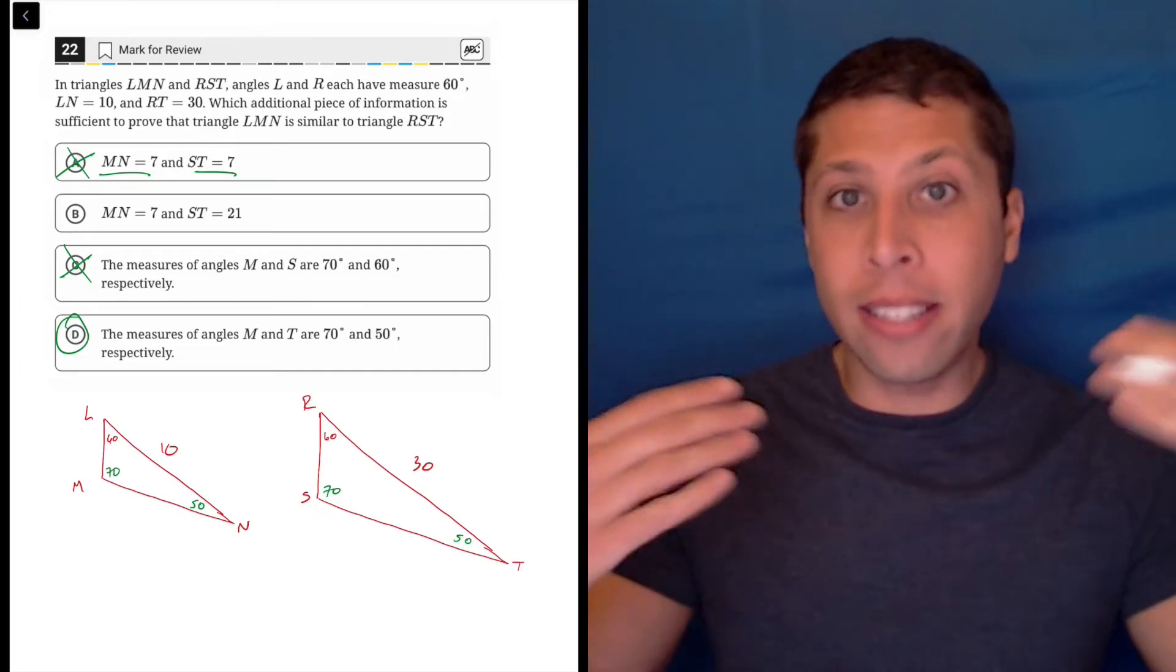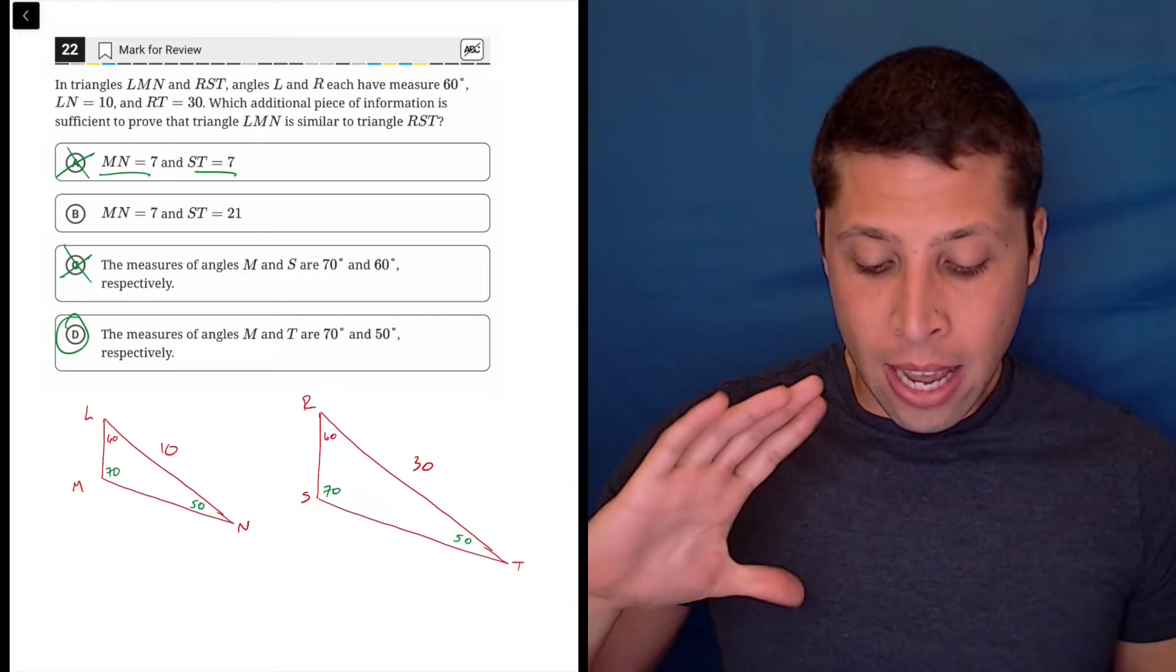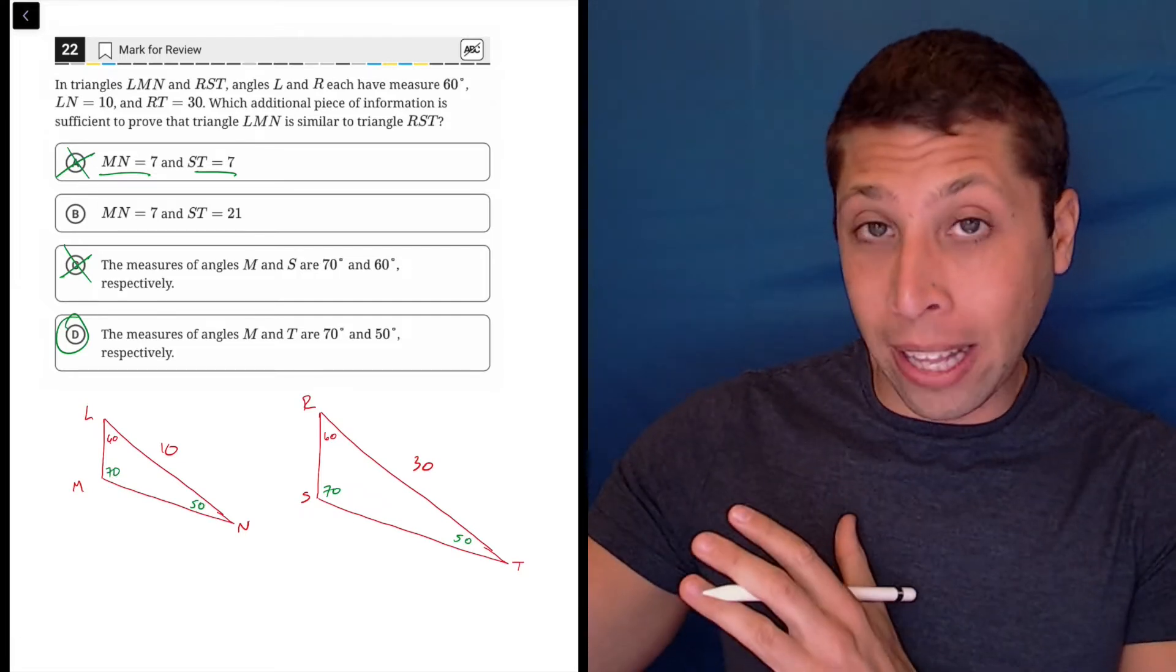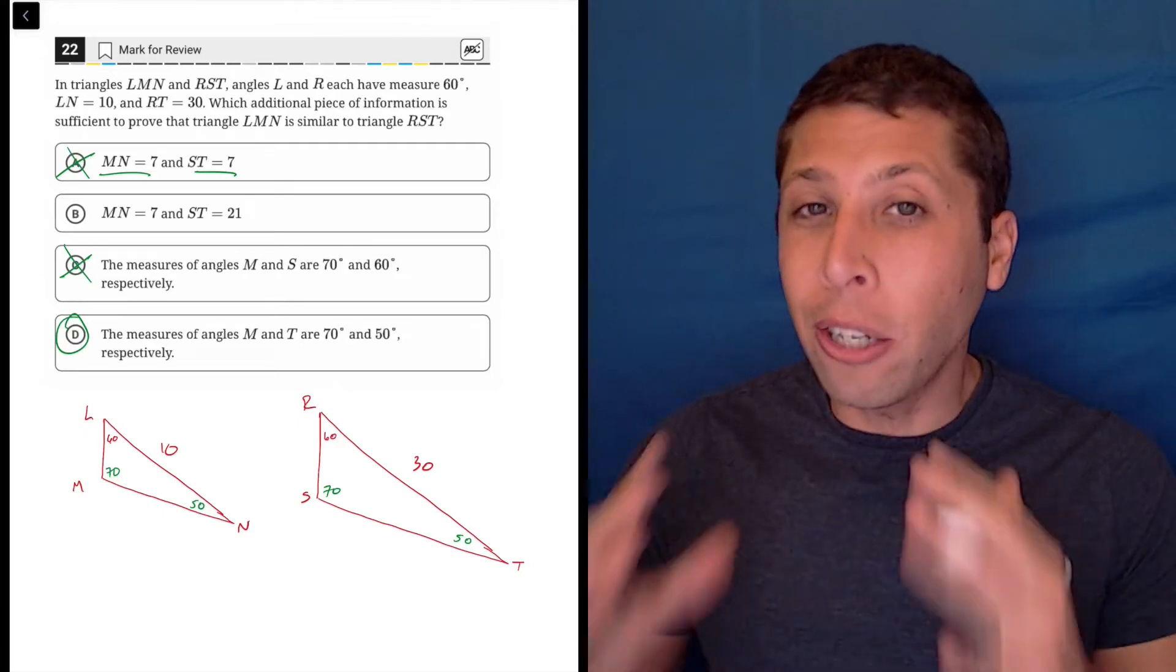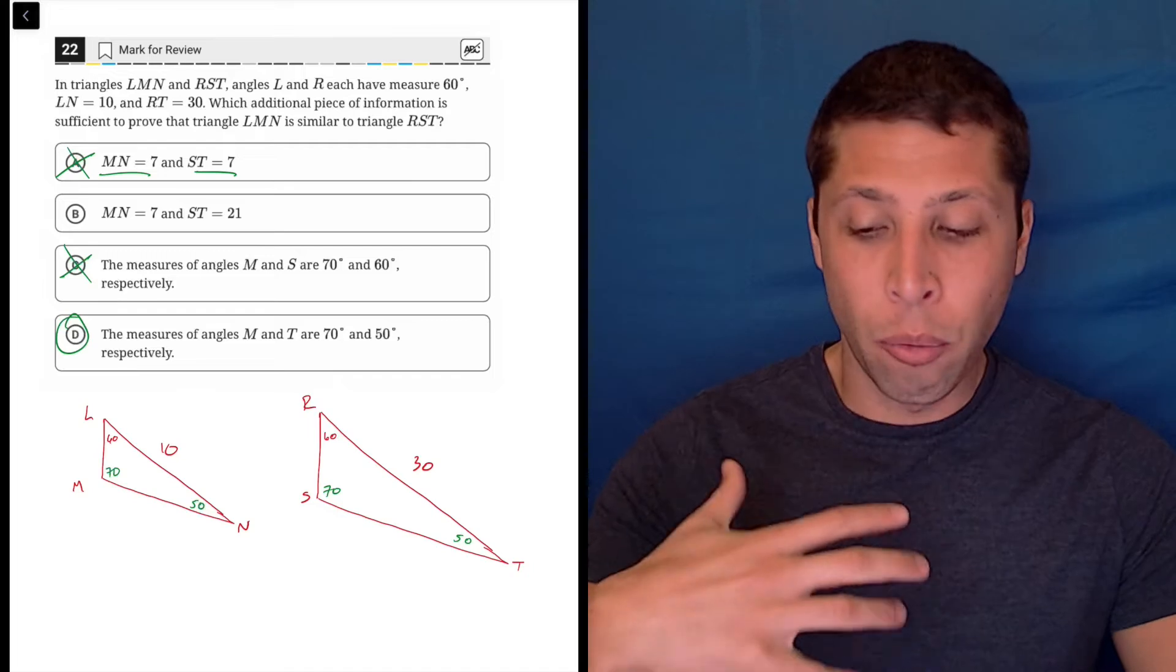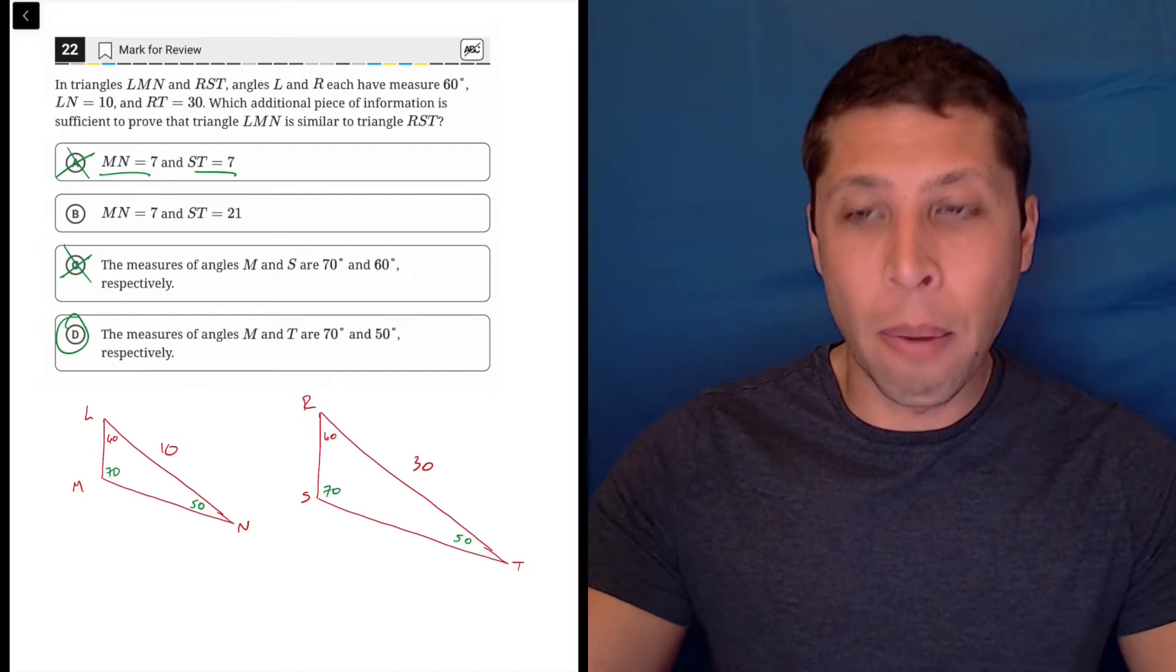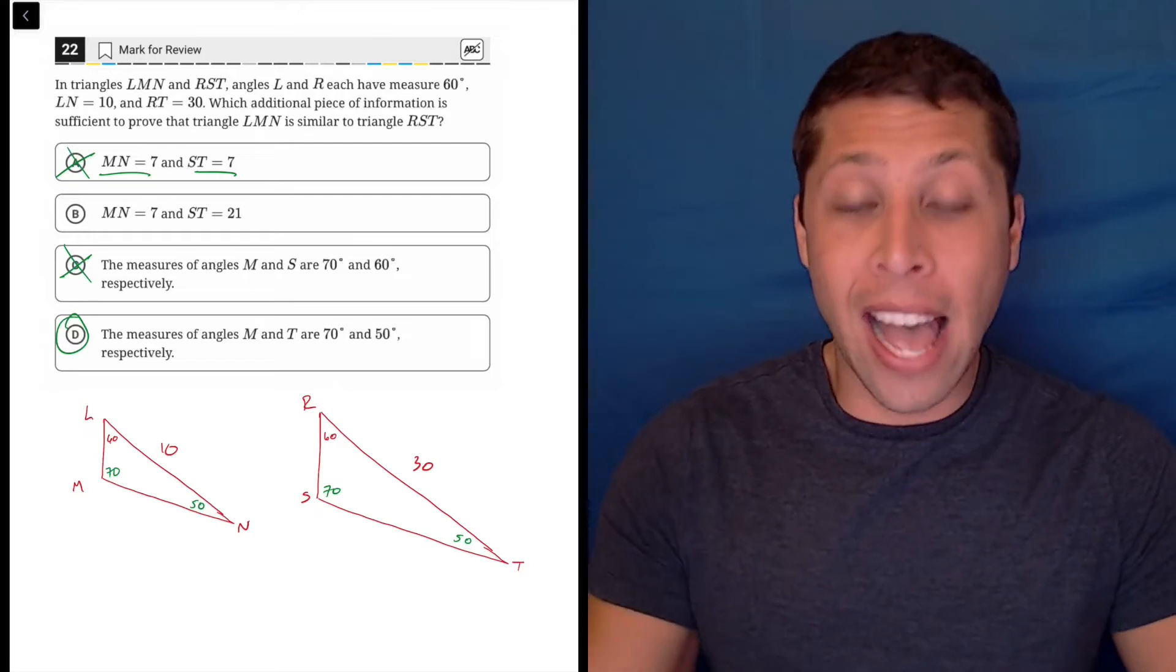So it does give us what we want, angles that are the same, and so for kind of just like simplicity reasons, B is going to look maybe like it might be right, but if we understand that similar triangles are really all about the angles, we're probably just going to more confidently pick D here. We might not understand why B is wrong, but we feel that D is closer to being right, and so that's it. That's the short version.